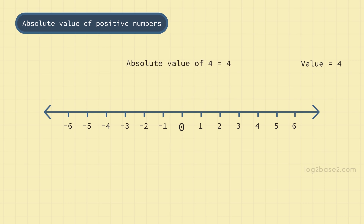Since the absolute value is a distance, it will never be a negative value. So the absolute value of a number is always positive. Our task is very simple: take any number — if it is negative, make it positive. If it is positive, don't make any change, just print it as it is.